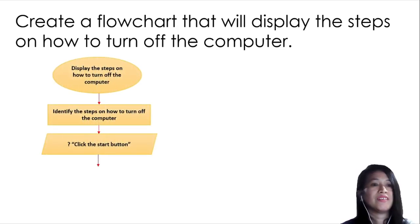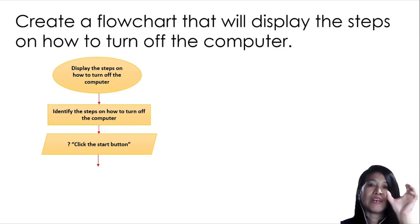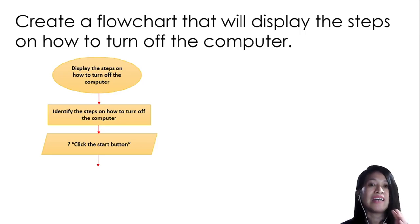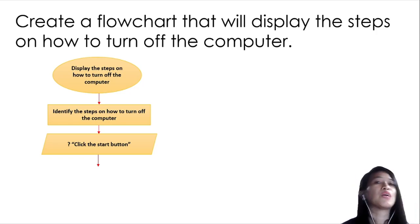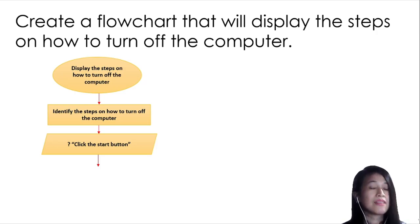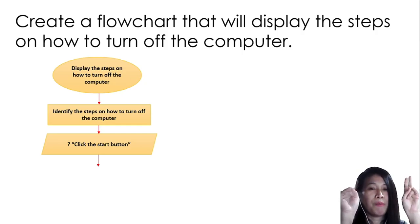You use double quotation marks — open and close quotes — around the content. For example: 'click the start button' will be displayed. If you don't put quotation marks, the flowchart will identify those words as a variable representing a value. Since you're going to display a string — meaning characters, words, or sentences — you must include it with open and close quotation marks.